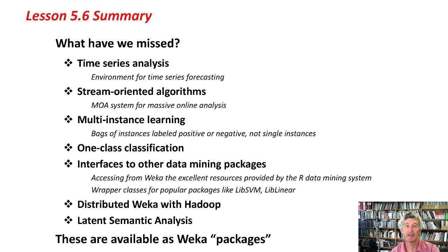Multi-instance learning, where it's not single instances but bags containing several instances that are labeled positive or negative. One-class classification, where you don't have any information about the negative class, just about the positive class. That makes things very difficult, but there are some things you can do.